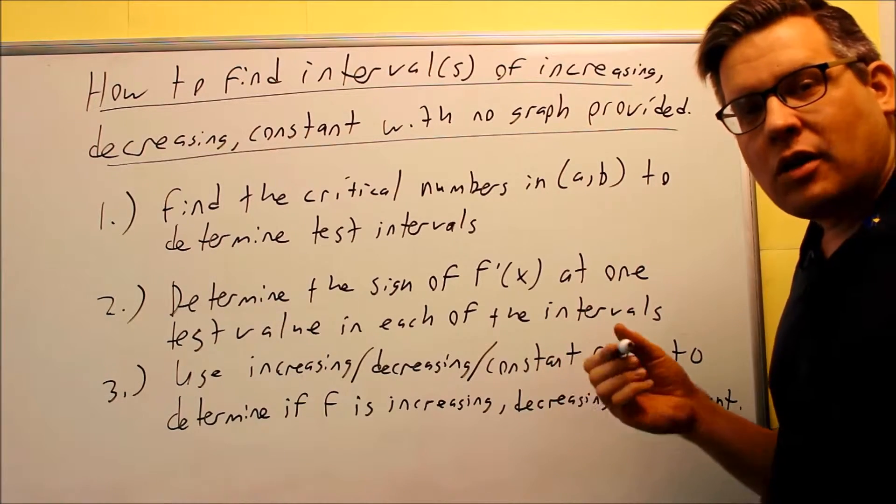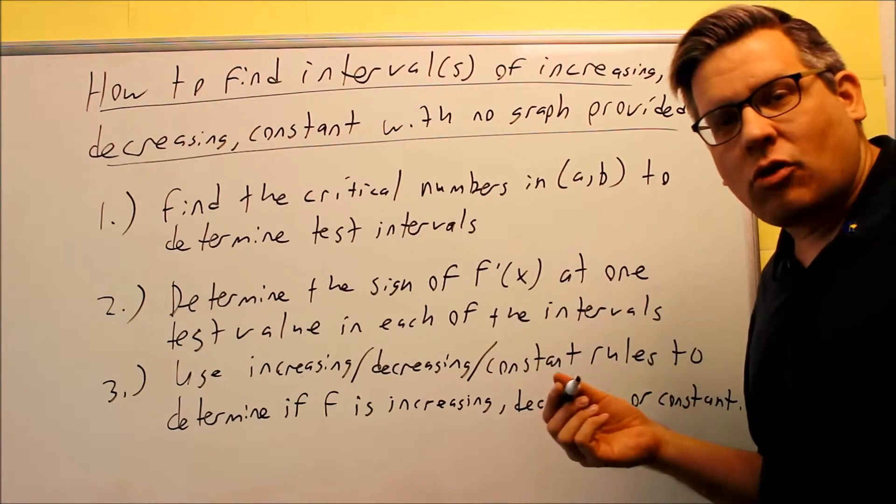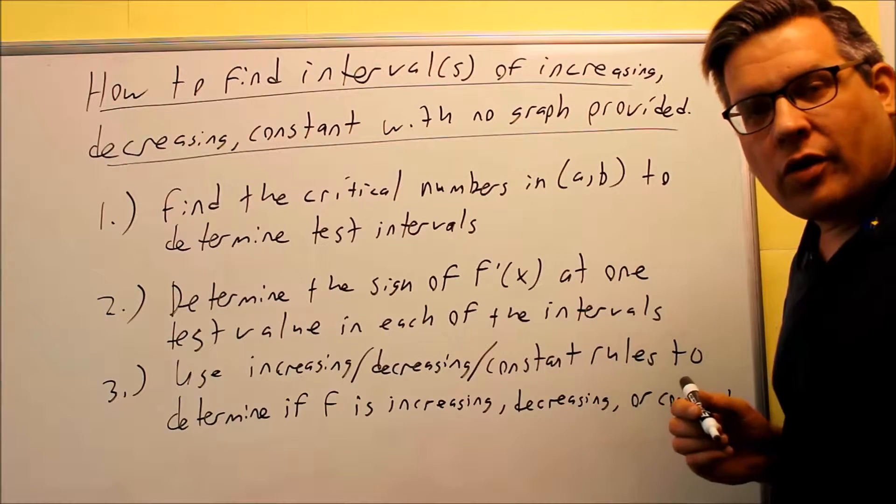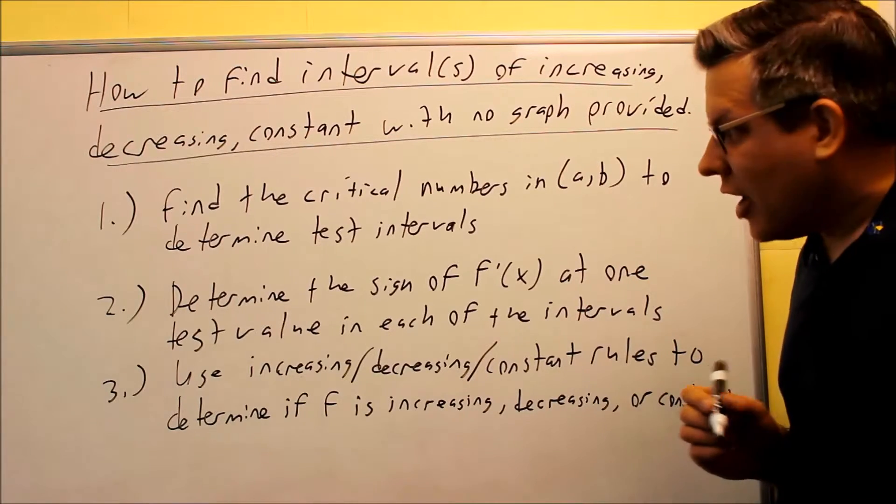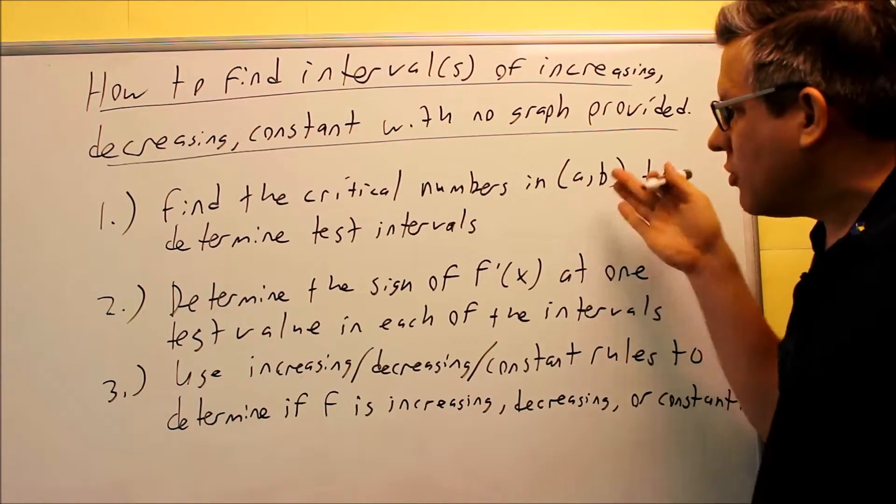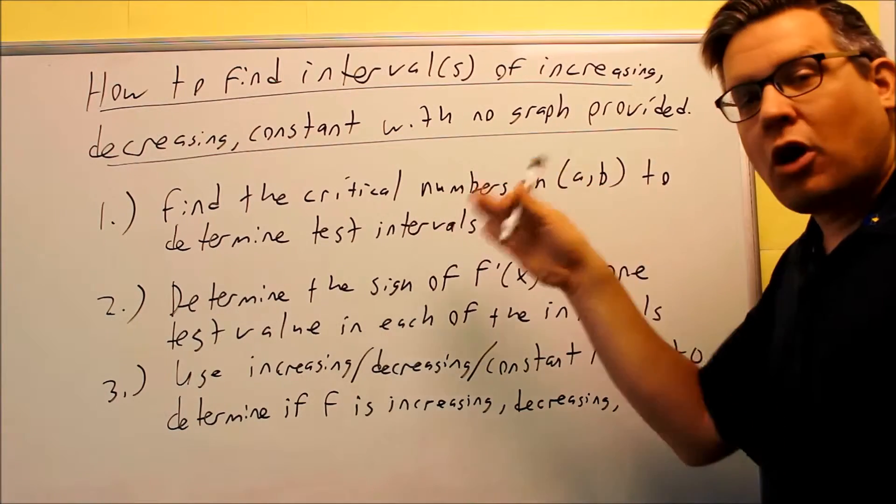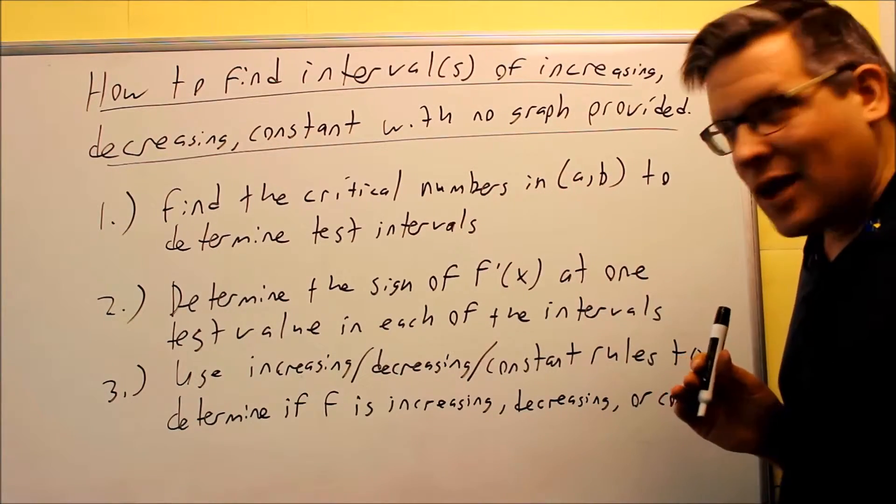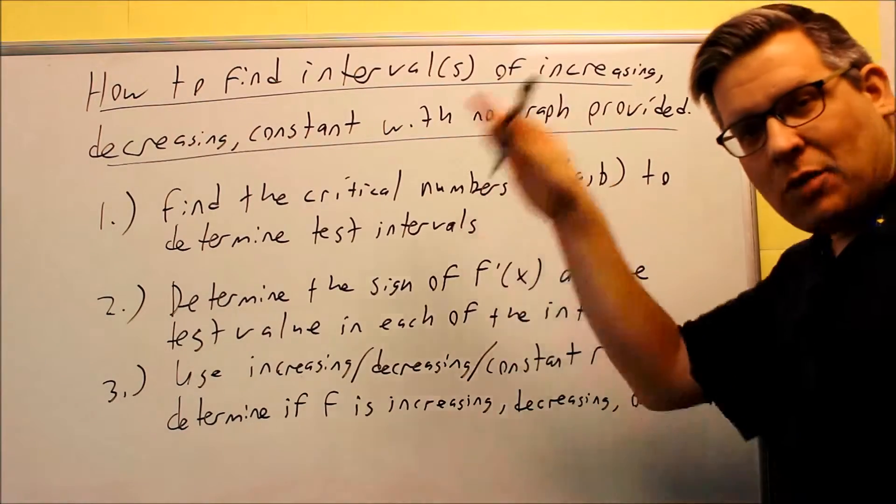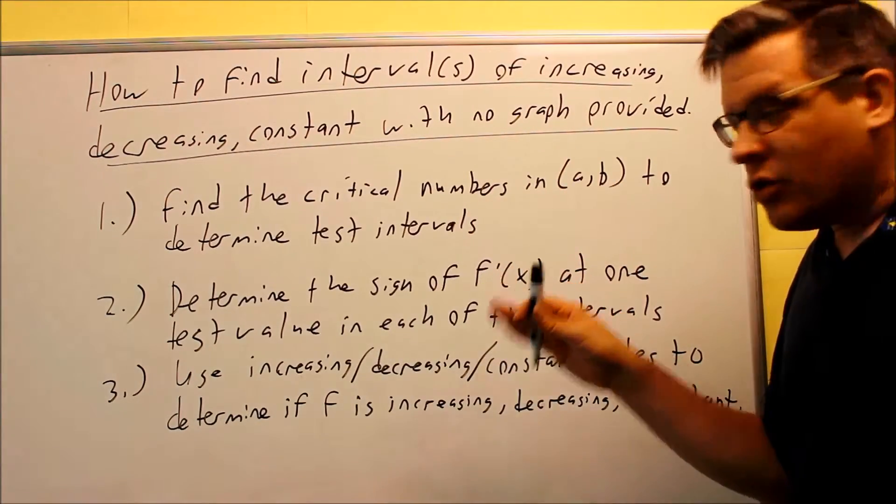Critical numbers you can find by setting the first derivative equal to zero or finding where the derivative is undefined. So we can find critical numbers that way, and that's going to basically break up our interval from a to b into smaller intervals that we're going to have to test. We're going to be making a table of values when we do this.